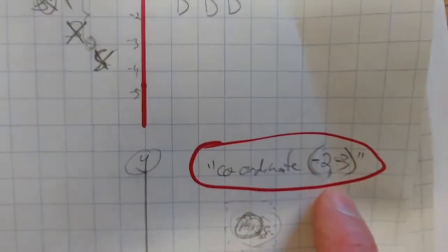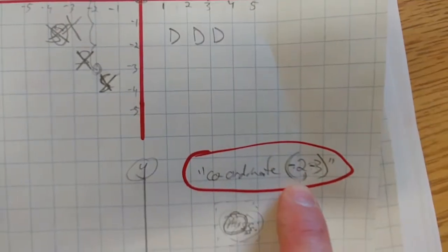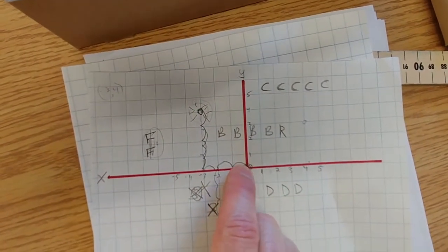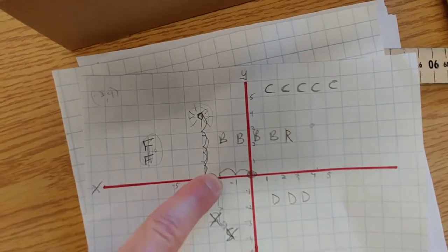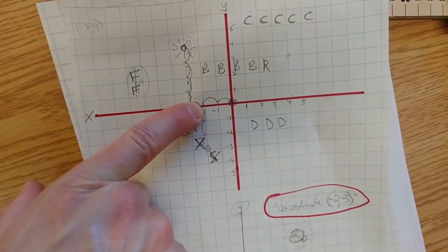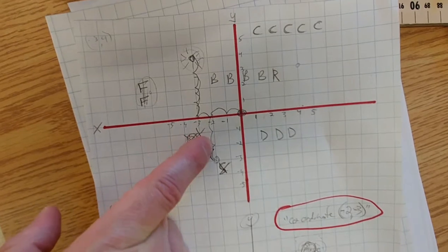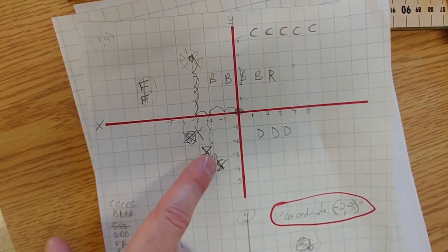So let's take this one for example. Coordinate negative 2, negative 3. So I'd start at my origin and I'd go negative 2 and I'd count down negative 3. 1, 2, 3. And that shot would land right there.